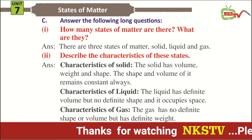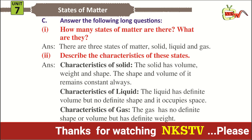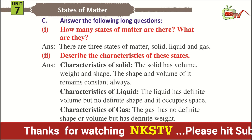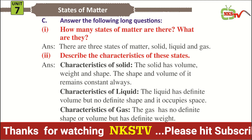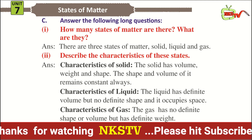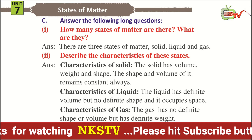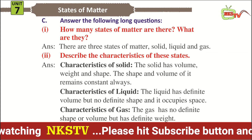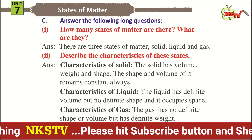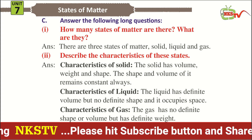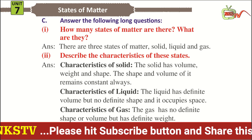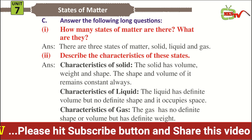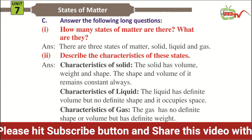Question number two: describe the characteristics of these states. Answer: characteristics of solid — the solid has volume, weight, and shape; the shape and volume of it remain constant always. Characteristics of liquids — the liquid has definite volume but no definite shape, and it occupies space.